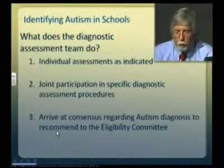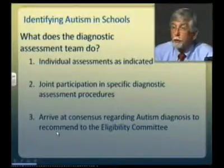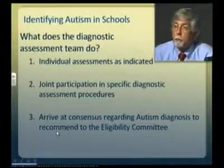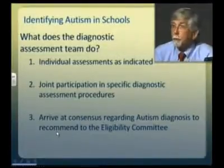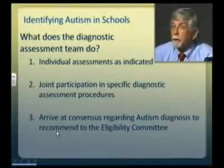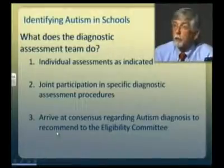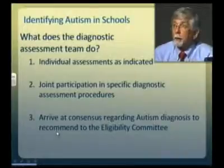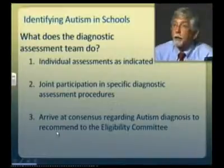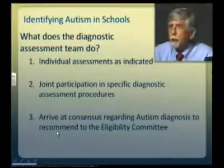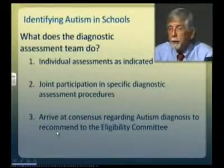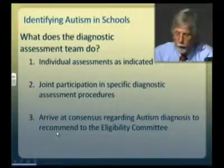What does this team do? There will be some individual assessments to the extent those are indicated. This model suggests a need for joint participation in specific diagnostic assessment procedures — the team observing the administration of a structured diagnostic instrument together, allowing multidisciplinary reflection on the child's characteristics in that context, and then arriving at a consensus regarding an autism diagnosis to recommend to the eligibility committee.